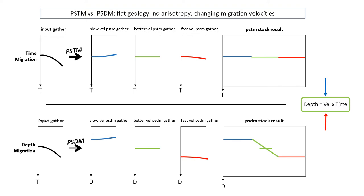I'm assuming flat geology, no dip, no anisotropy. So the stack of these events would be roughly the same time. There might be a very slight pull-up for the blue velocities, just because at the farther offset it tips up. And it might be slightly down in time for the red because it's slightly faster velocities. But by and large, that flat structure stays relatively flat.